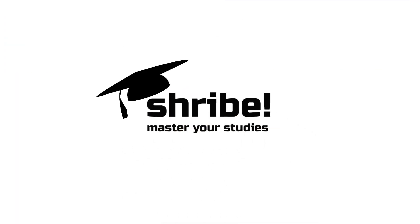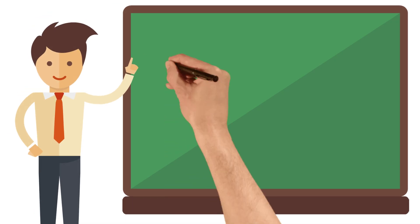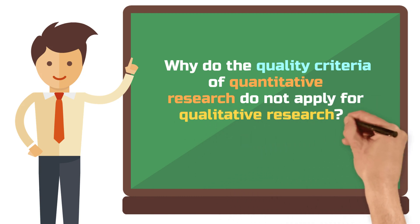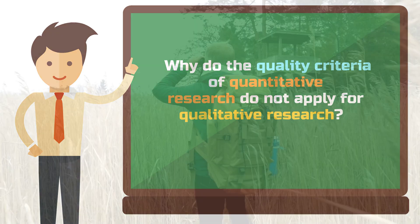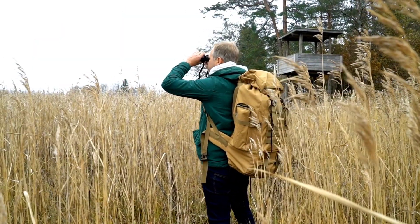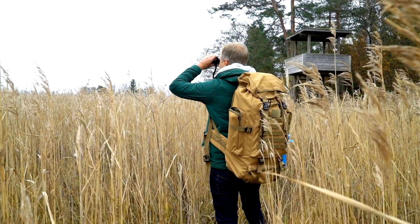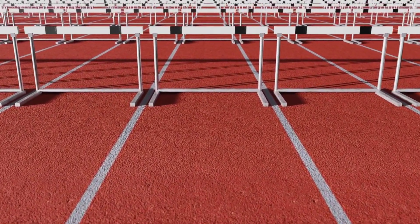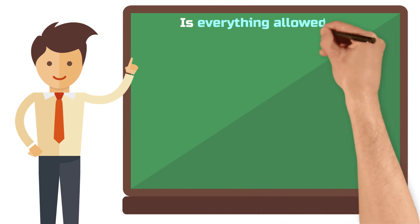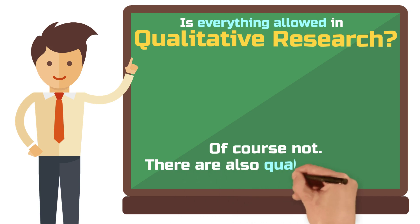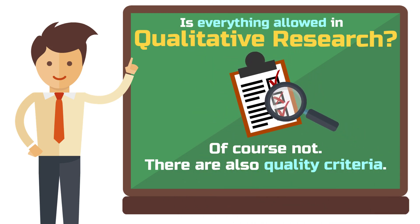Why do the quality criteria of quantitative research not apply for qualitative research? Let's look at objectivity for example. Think of an ethnographic research project where a scientist goes into the field to observe people in their natural environment. Here, objectivity can actually be a major hindrance and the opposite is needed. But that doesn't mean everything is allowed in qualitative research. There are criteria for good qualitative research that help ensure your research design is methodologically sound.